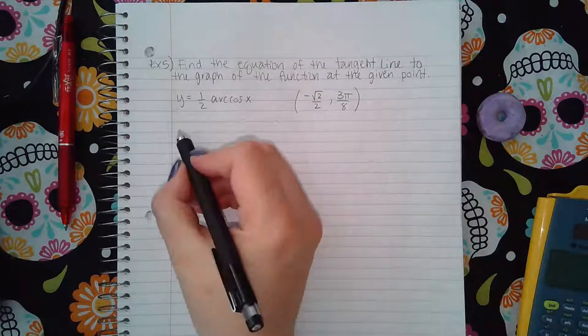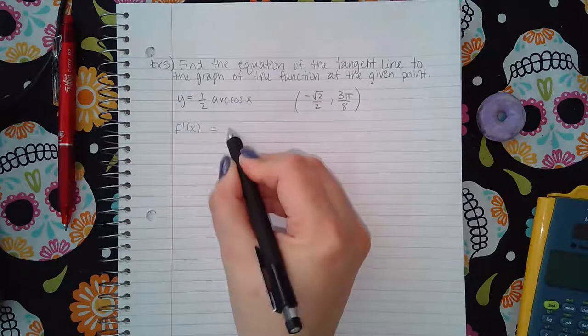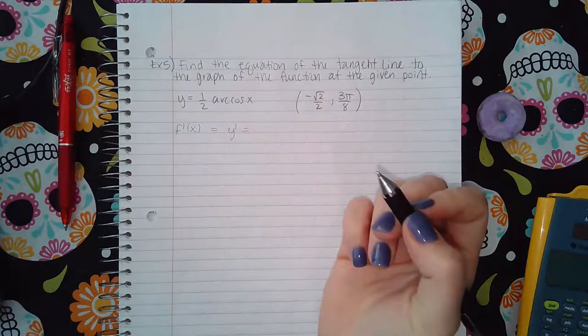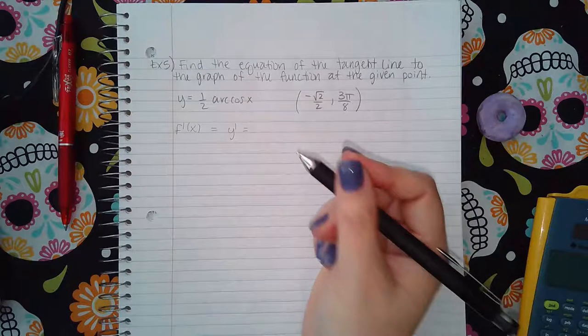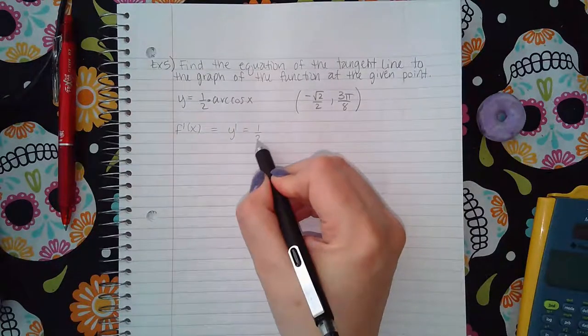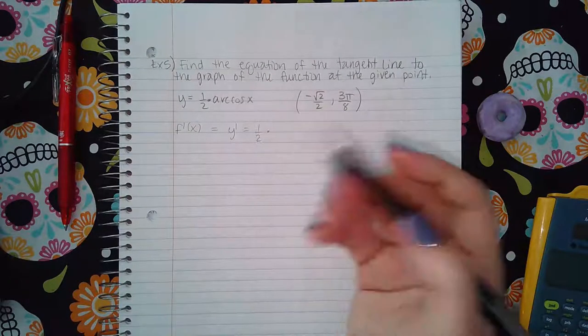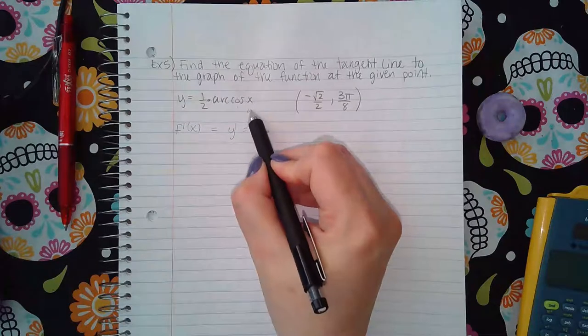So we definitely need to have the derivative if they're asking us for the tangent line. We need to find f prime of x, or in this case y prime, same thing, just different notation. I'm going to treat this as a coefficient, so I'm going to have one half times the derivative of this arc cosine.